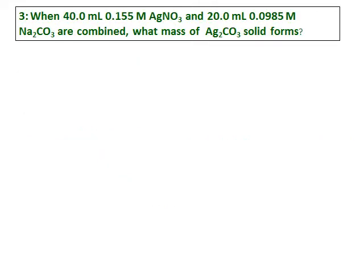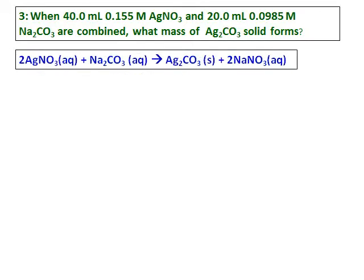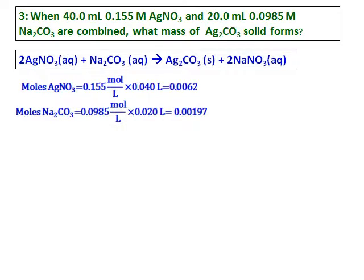When 40 milliliters of 0.155 molar silver nitrate and 20 milliliters of 0.0985 molar sodium carbonate are combined, how much of silver carbonate solid forms? I start with writing the equation and balance it also. Silver nitrate aqueous reacts with sodium carbonate, gives you silver carbonate. It's already mentioned in the question that silver carbonate is the solid form. And sodium nitrate will be in aqueous form. First calculate the moles of silver nitrate and moles of sodium carbonate to get the limiting agent.